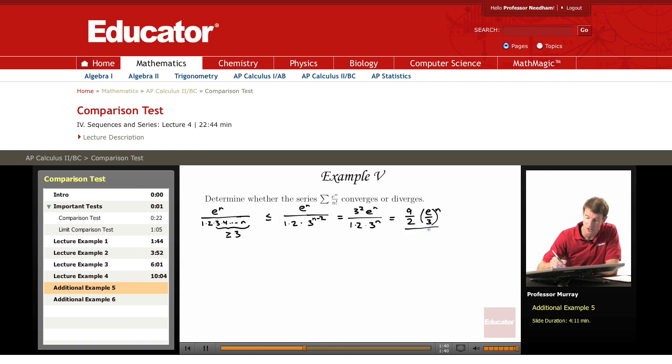So that's the series that I'm going to use as my bn. Remember an is always the series that you're given. And the point here is that an is less than or equal to bn and the sum of bn converges.